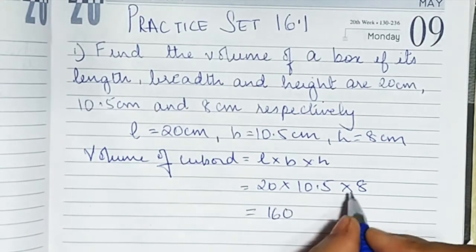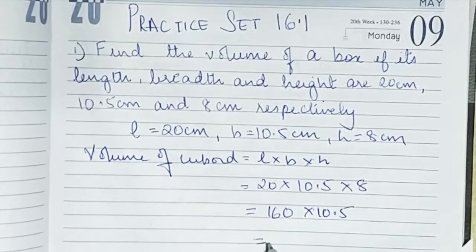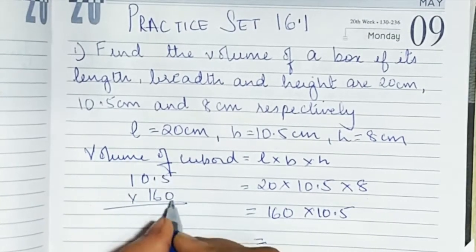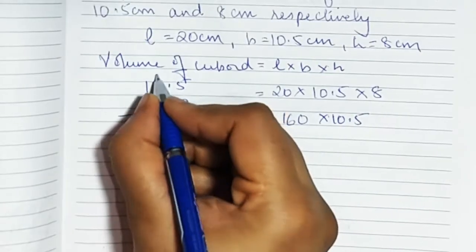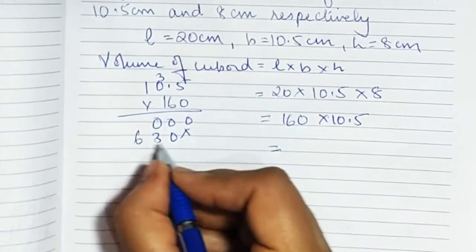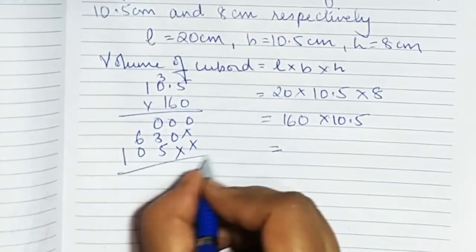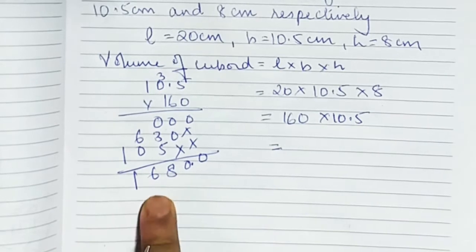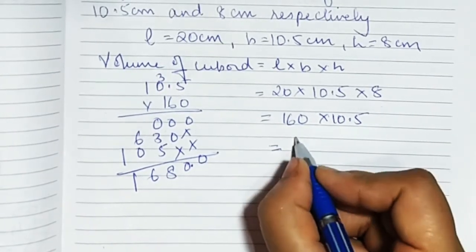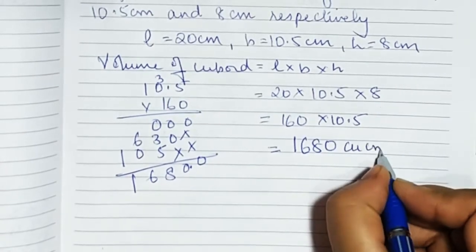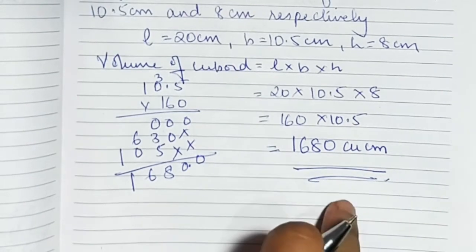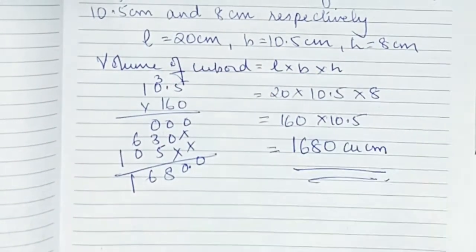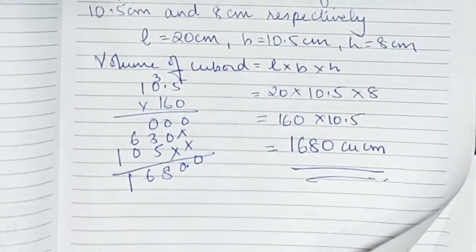Multiplying: 20 × 8 = 160, then 160 × 10.5 = 1680. So the answer is 1680 cubic centimeters. The volume of the box is 1680 cubic centimeters. You just have to multiply the length, the breadth, and the height. Now let's do the second sum.